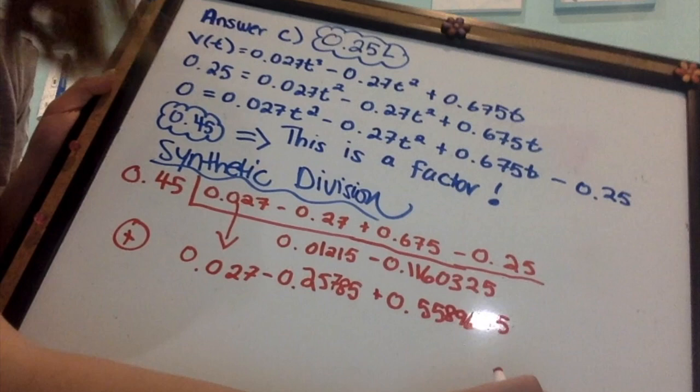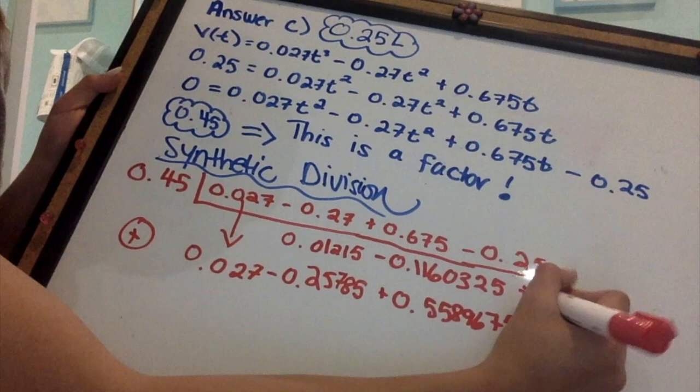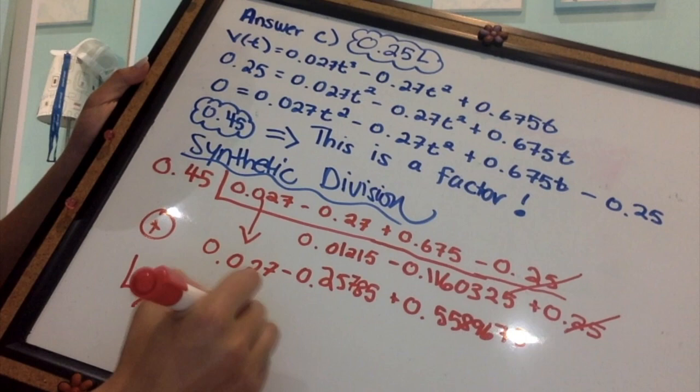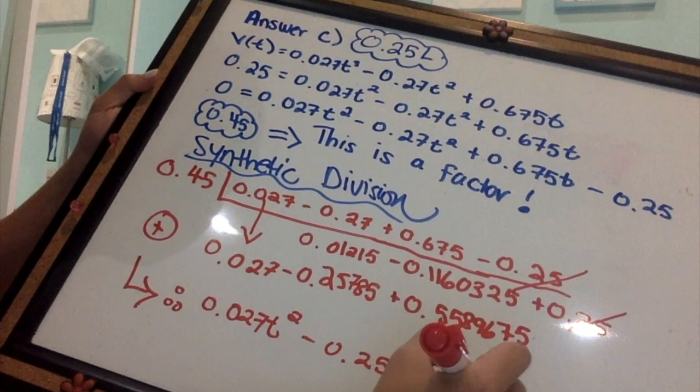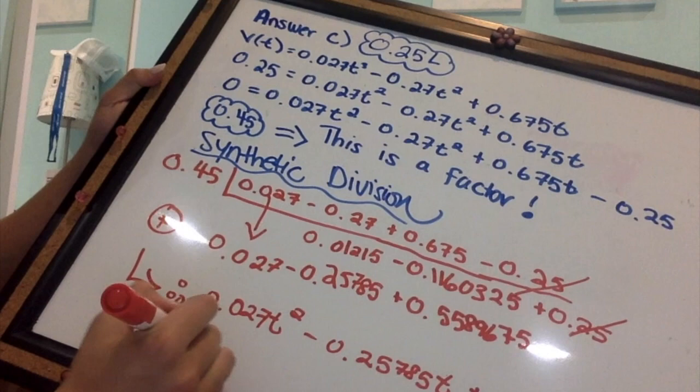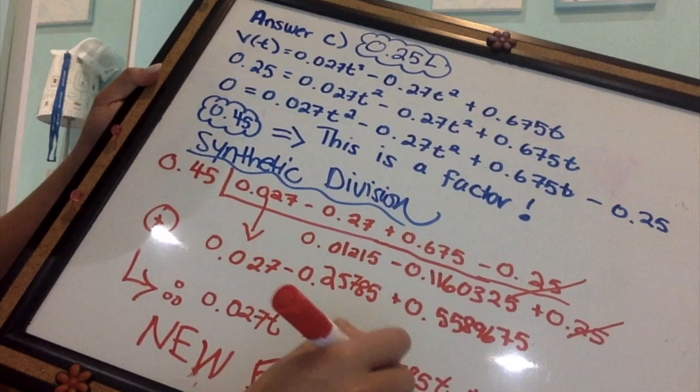Finally multiplying my final values, I am left with 0.25 as there is no remainder left. And now, I am able to have a new equation of 0.027t squared minus 0.25785t plus 0.5589675. That is my new equation.